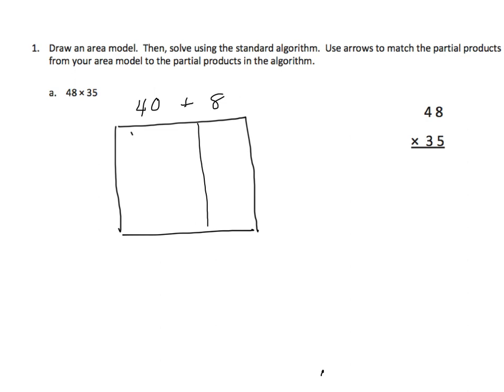Now we're going to decompose the second factor. Again, we're going to kind of reverse this. We're going to put the ones on the top. So we have 5 ones and we have 30, or 3 tens, or 30. So now we're going to work with this and we're going to relate it to the standard algorithm.